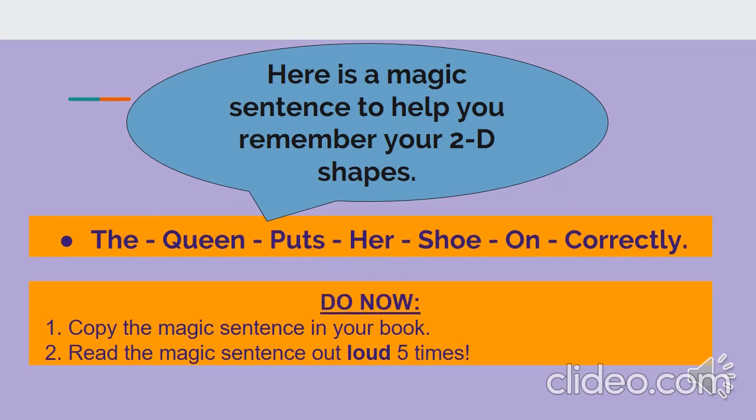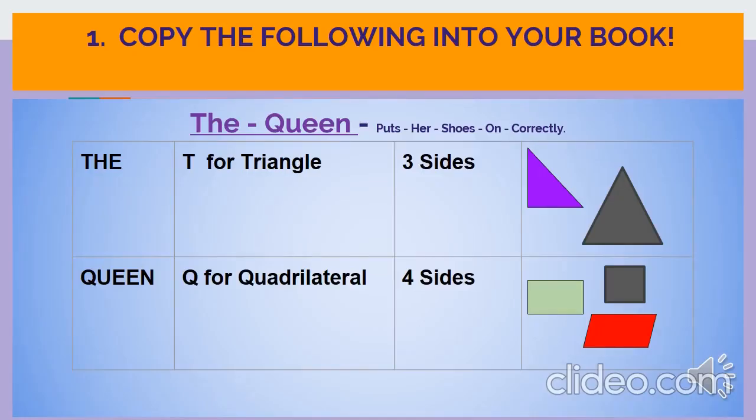For your do now, write the date and the heading, which is 2D shapes. Skip a line and copy the magic sentence into your book. When you are done, read the magic sentence out loud 5 times. Yes, I said it. Read the magic sentence out loud 5 times.